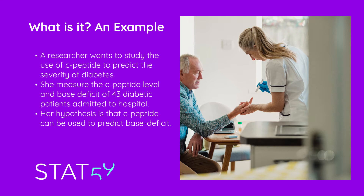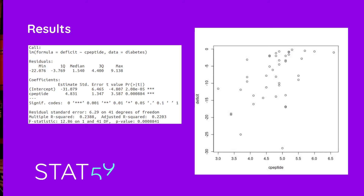So what is regression diagnostics? Let's use an example of someone who might be using a linear regression test. Here we have a researcher who wants to study the use of C-peptide to predict the severity of diabetes. She measures the C-peptide level in 43 diabetic patients and at the same time she measures their base deficit, which is a measure of the severity of their diabetes. Here we can see her data plotted with base deficit on the y-axis and the level of C-peptide on the x-axis.